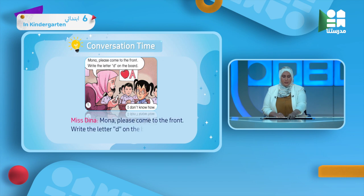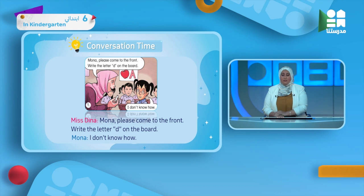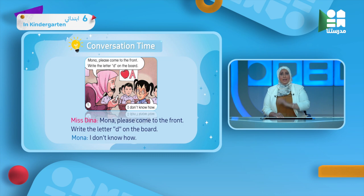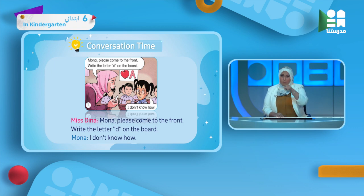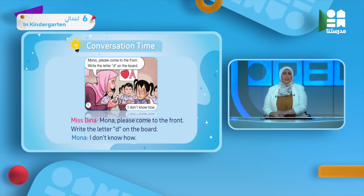Let's look at the first picture. Miss Dina says: 'Mona, please come to the front. Write the letter D on the board.' Miss Dina wants Mona to come to the front and write letter D on the board. Mona says: 'I don't know how' — meaning she doesn't know how to do it.